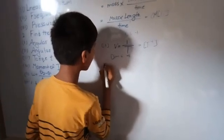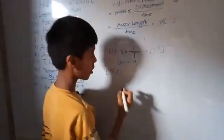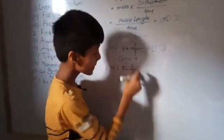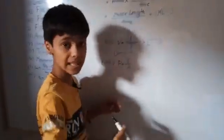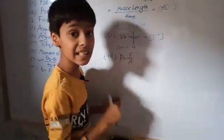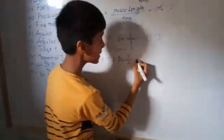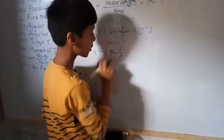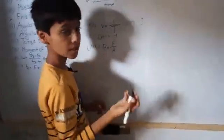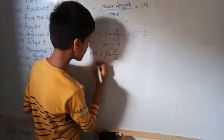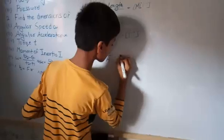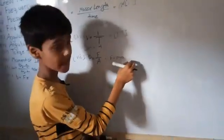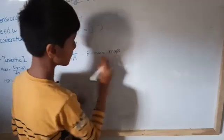Now the third is pressure. We have studied p = F/A, where p is pressure, F is the magnitude of force applied, and A is the area over which the force is applied. To find the dimensional formula for pressure, we first find the dimensional formula for force and area separately, then divide them. For force, by Newton's second law: F = ma, where m is mass and a is acceleration.